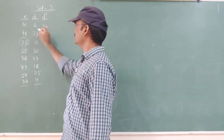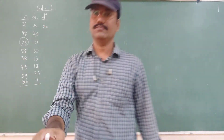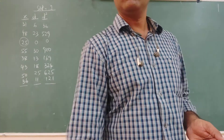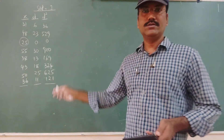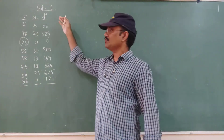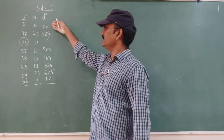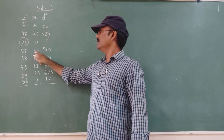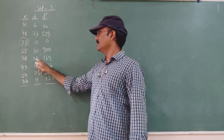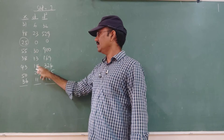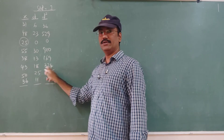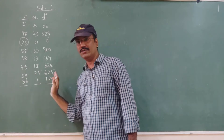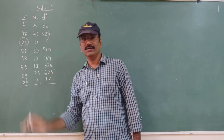6 squared is 36. The squared values are: 36, 23 squared, 30 squared = 900, another 30 squared = 169 — wait, 18 squared, 25 squared, 11 squared = 121.